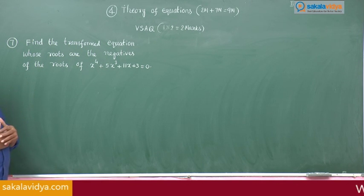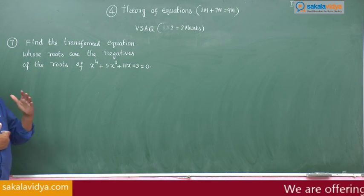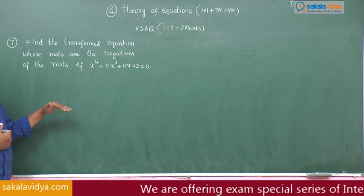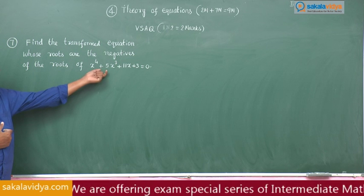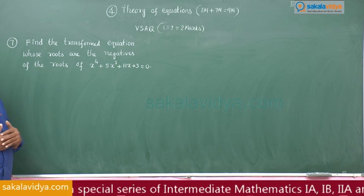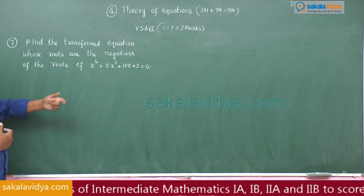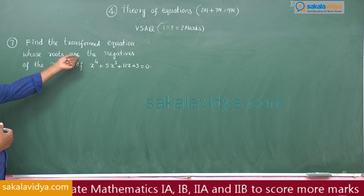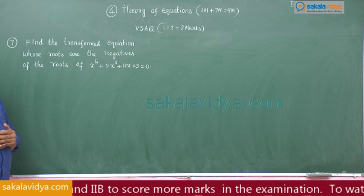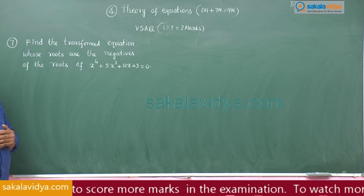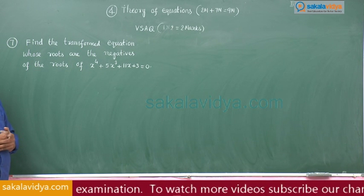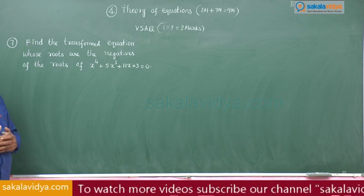Now, how to solve this problem. Let us consider f of x, the corresponding polynomial to the given equation. If you want to find out the transformed equation whose roots are the negatives of the given equation, just substitute x with minus x. That means f of minus x equated to 0 gives the required transformed equation.